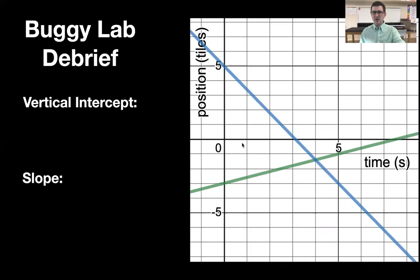And I just want you to start thinking about why does the blue team and the green team have different vertical intercepts? Why do they have different slopes? And if you can answer those questions, then you're going to be well on your way to crushing the debrief that we're going to do in the next class.